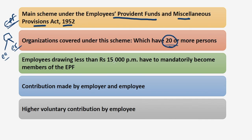Employees whose pay is more than Rs. 15,000 per month at the time of joining are not eligible and are called non-eligible employees. Employees drawing less than Rs. 15,000 per month have to mandatorily become members of EPF. An employee drawing above the prescribed limit of Rs. 15,000 per month can become a member with the permission of the Assistant PF Commissioner if both the employee and employer agree.